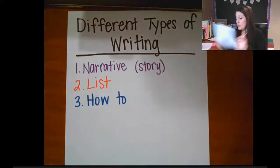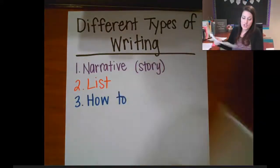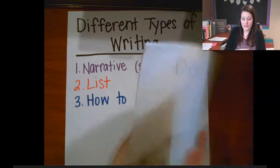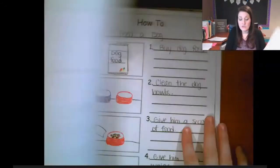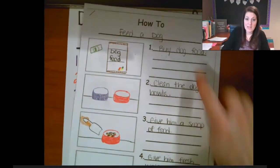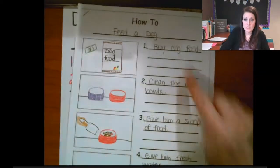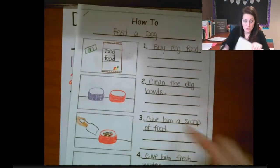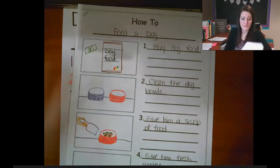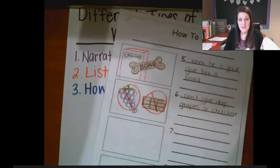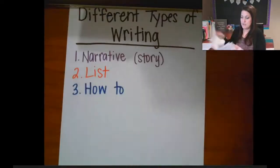But it doesn't have to just be about drawing. In my dog book, I did a how-to showing you how to feed a dog: buy dog food, clean the dog bowls, give him a scoop of food, give him fresh water. Those are numbered, showing you step by step how to do something. That is another type of writing you could include.